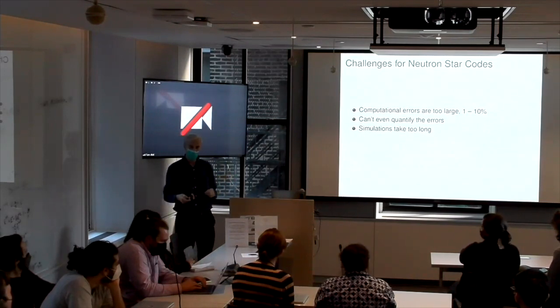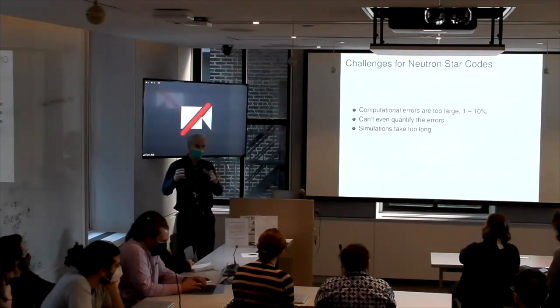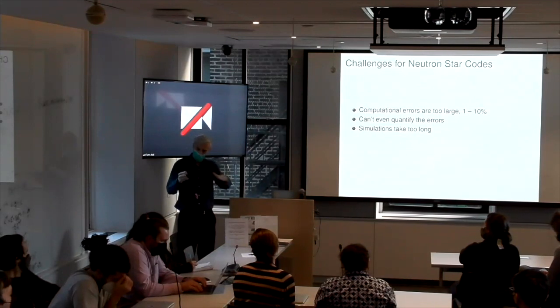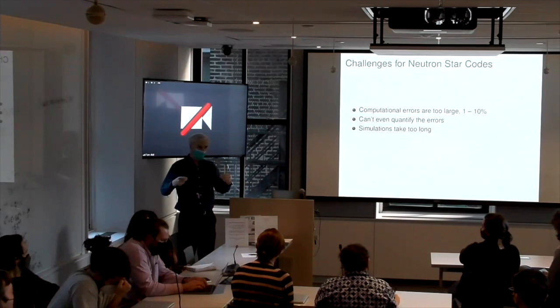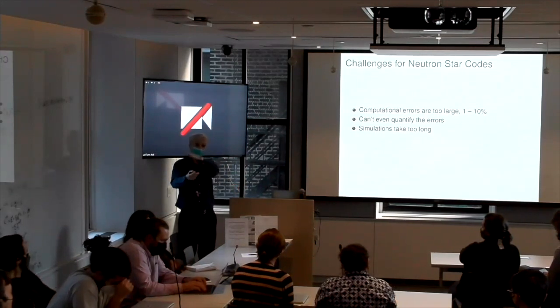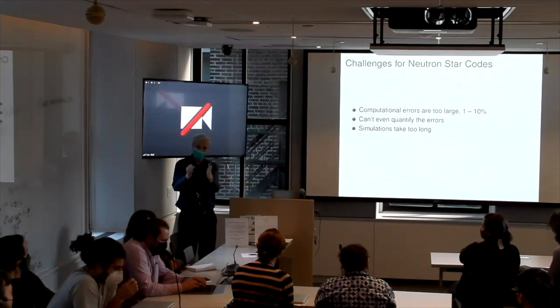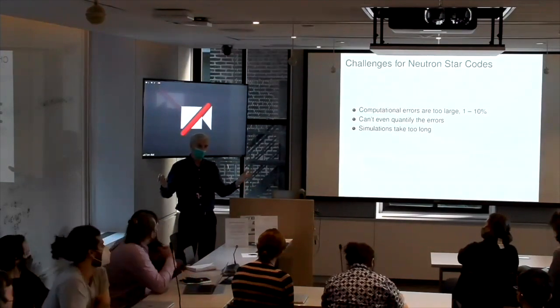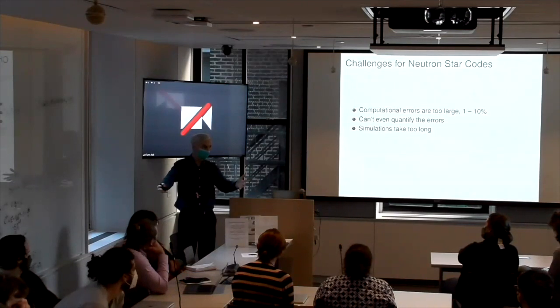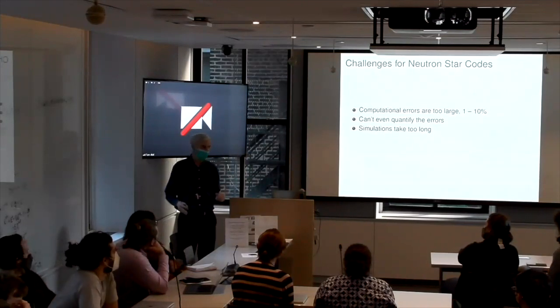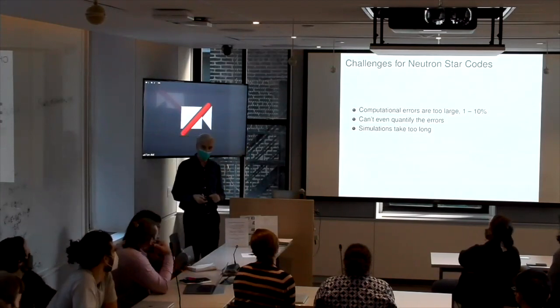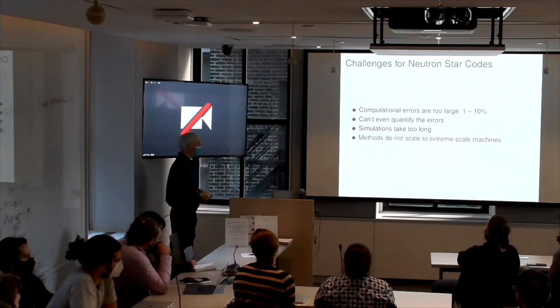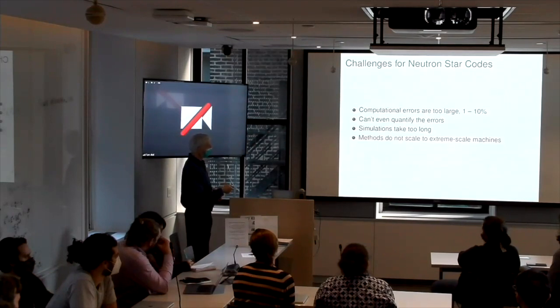In fact, we can't even quantify the errors often because often the way you quantify the errors is you run at increasing resolution, right? And then you can see how the errors are scaling. If you understand from the algorithm how they should scale, you could kind of infer what the errors are. But that assumes that you're already in the convergent regime, where this Taylor series behavior is dominant. You can use the first few terms in the Taylor series to approximate the error. We're probably not in that regime. So it's very hard. We just run with the most resolution we can afford and then we publish that result and we wave our hands a little bit. And simulations take too long. I have a lot of finding black holes are even longer for neutron stars because you have all of your physics.